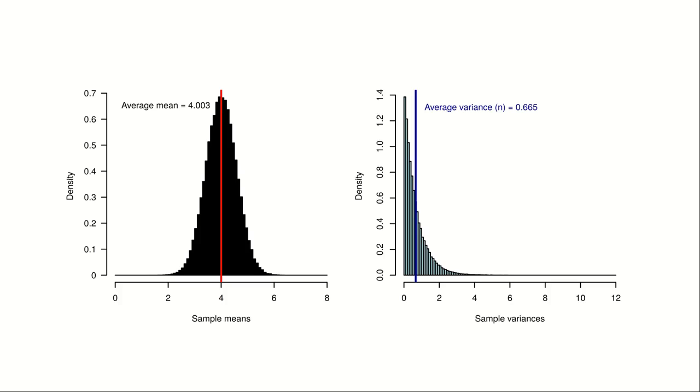If we run 100,000 samplings, the average of all the averages we compute is around 4, which is a pretty good estimator.